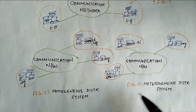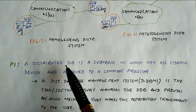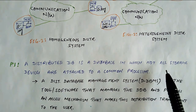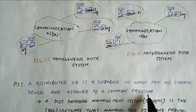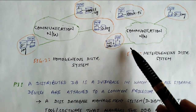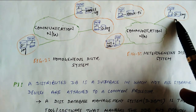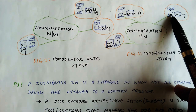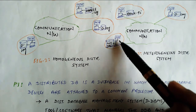Now we will understand the Distributed Database. The first point: a distributed database is a database in which not all storage devices are attached to a common processor. Each site and each computer has its own individual processor — this processor will be different for each site.